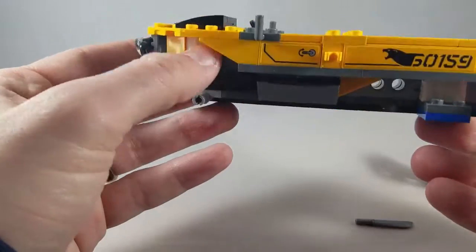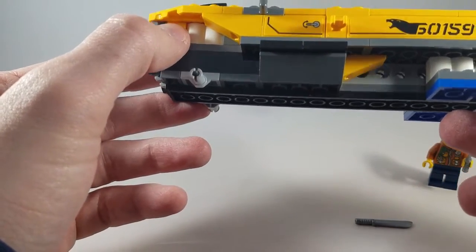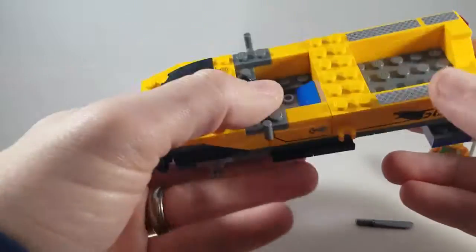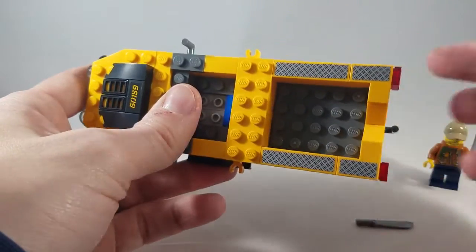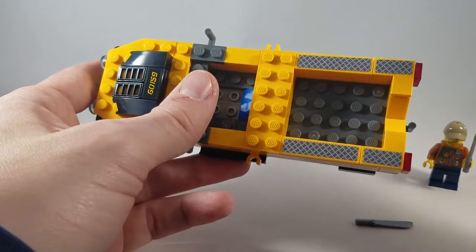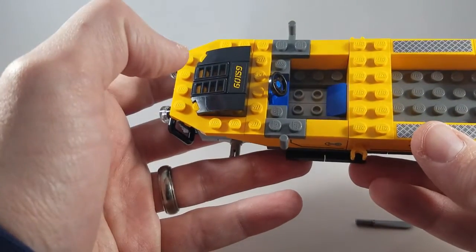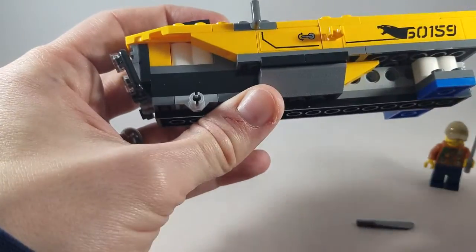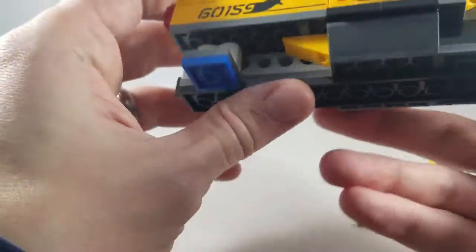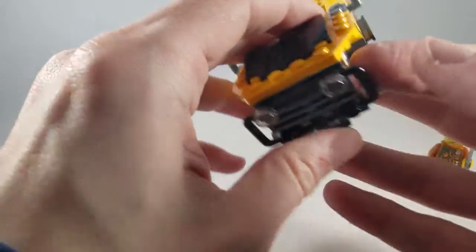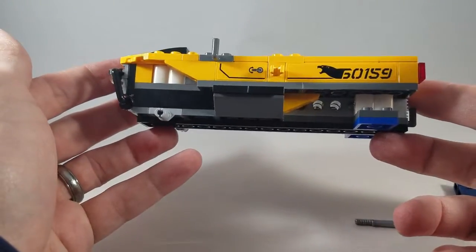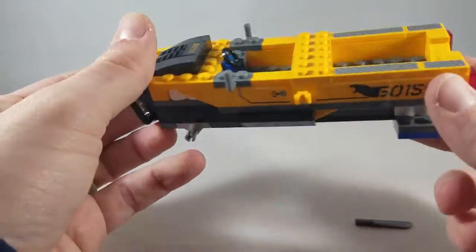So first off, there are 10 stickers like I said a moment ago on the set. Nine of them are now on the vehicle. So one, two, three, four, those making the metal plates of the truck. There's an extra sticker there that's not particularly useful. And then you have two there and two on the other side.